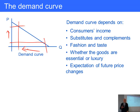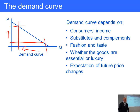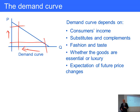This is the way most goods are going to be expected to move. You move up and down the demand curve primarily by changing the price. The shape and the slope of the demand curve depends on these factors. First of all, consumers' income.